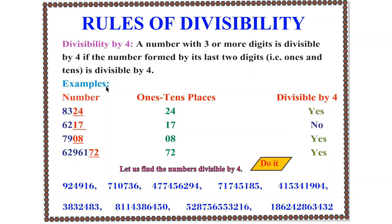Let us do some examples. We have the number 8324. According to the rule, we check the number formed by its last 2 digits — the 1s and 10s places only. It is 24. We know that 24 is divisible by 4, so the whole number 8324 is divisible by 4.